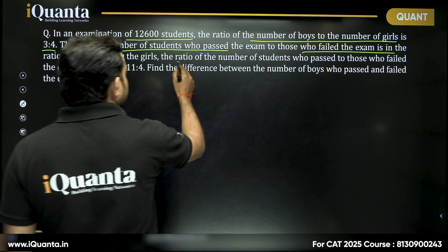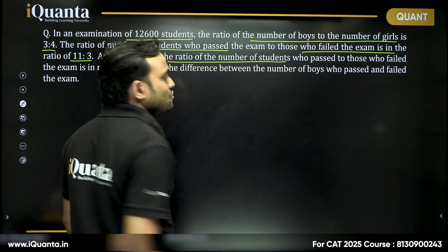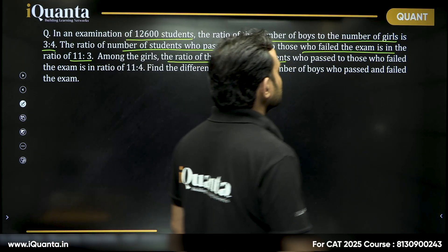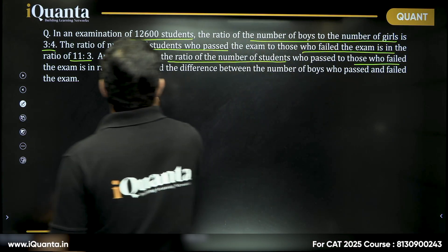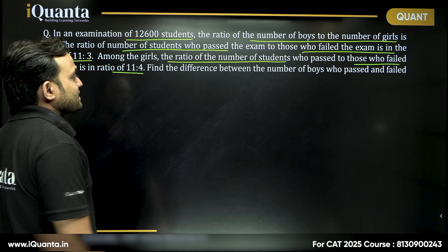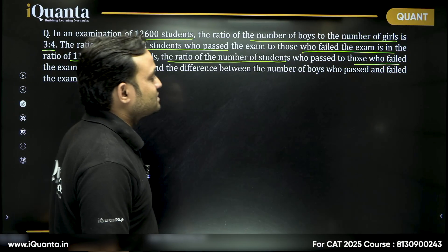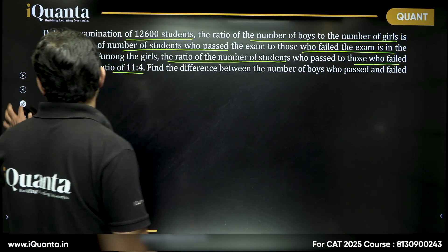Among the girls, the ratio of number of students who passed to those who failed the exam is in the ratio of 11 is to 4. Find the difference between the number of boys who passed and failed the exam.